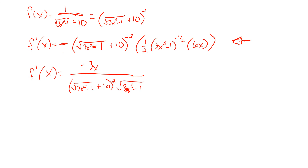So, chain rule: we have a function inside of a function. You take the derivative of the outside function, the inside function does not change, and then you multiply by the derivative of the inside function. One of the biggest mistakes is people take the derivative of the outside and put the derivative of the inside inside of it — the inside doesn't change; multiply the derivative to the end. Next time, we'll add in some sine and cosine functions. Until then, keep working problems, keep asking questions, and as always, happy mathing.